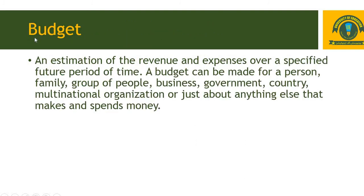Now the terms starting from B have begun. Number 1 under those terms is Budget — chapter number 6 was about budgeting. It is an estimation of the revenue and expenses over a specified future period of time. A budget can be made for a person, family, group of people, business, government, country, multinational organization, or just about anything else that makes and spends money. Time is very important here; otherwise, we cannot make a budget.